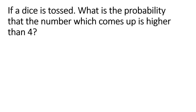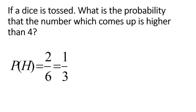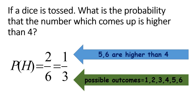If a die is tossed, what's the probability that the number which comes up is higher than 4? The numbers higher than 4 are 5 and 6 — that's 2 outcomes. The total possible outcomes are 1 through 6 which is 6. So the answer is 2 over 6, reduced to 1 third.